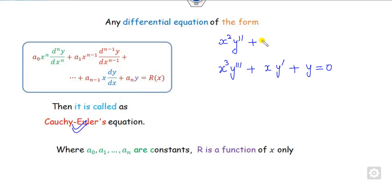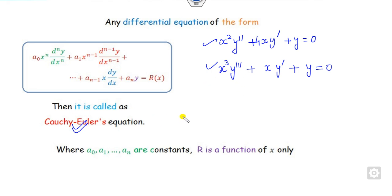Similarly, if you look at this, this is f(x, y', y''), so it is power 1, and this is again the Cauchy-Euler equation. Any equation of this form is called the Cauchy-Euler equation, where a1, a1, a1, 4 — these are my constants.